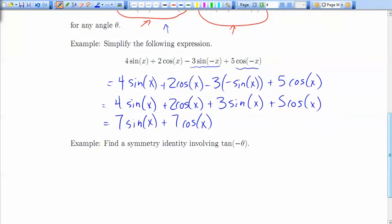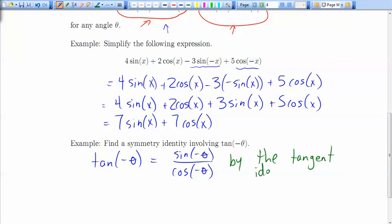Now let's figure out a symmetry identity for tangent. Is it an even or odd function or maybe neither? Well, we know the tan of something is the sine of that thing over the cosine of that angle, by the tangent identity from last video. From the symmetry identities, we have sine of negative theta is negative sine theta. Cosine of negative theta is cos theta.